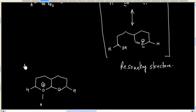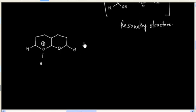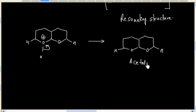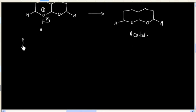So, we will have this product and we can deprotonate to get the acetal. So finally, this acetal will be obtained in this reaction. So, this is an example of intramolecular acetal formation.